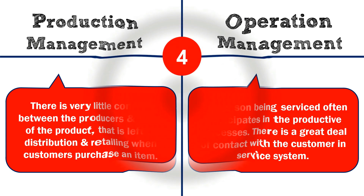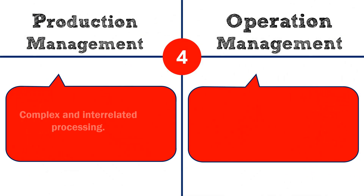The fourth difference: production management is often said to involve complex and interrelated processing, whereas operation management involves relatively simple processing.